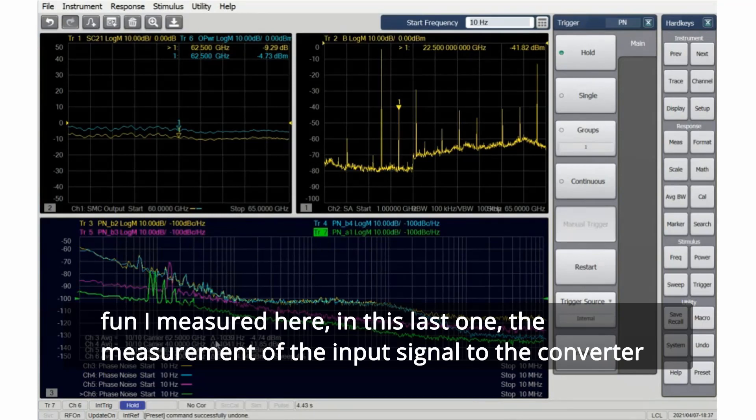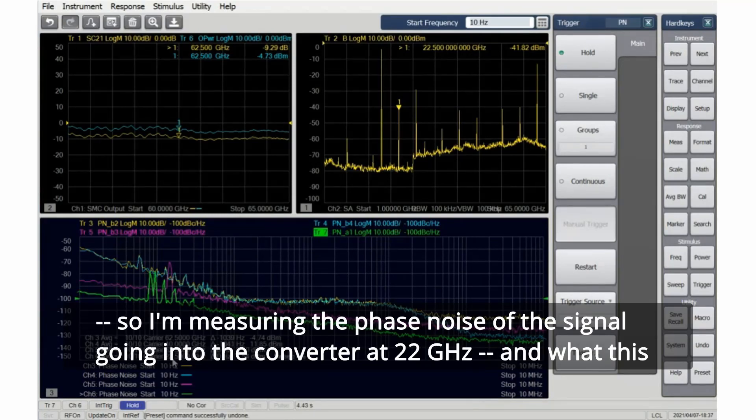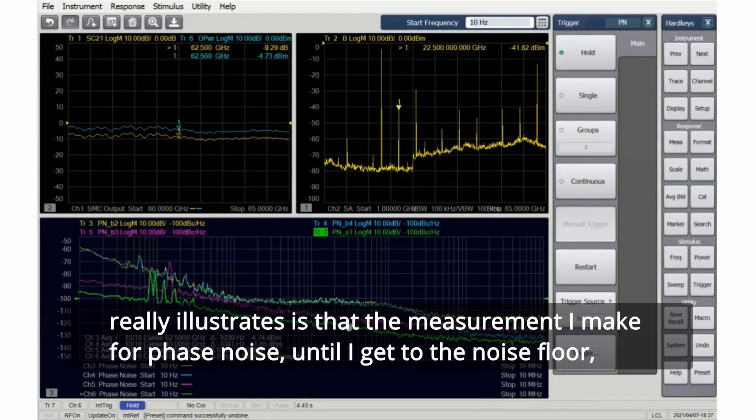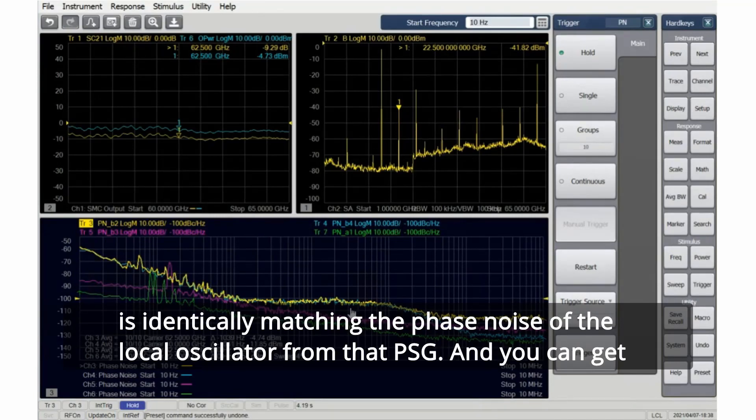What this really illustrates is that the measurement I make for phase noise until I get to the noise floor is identically matching the phase noise of the local oscillator from that PSG. You can get an idea of how much noise floor I've lost - I'm at minus 4 dBm as the power into my receiver directly.